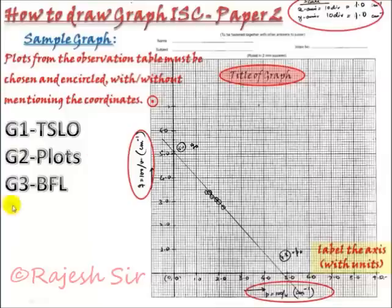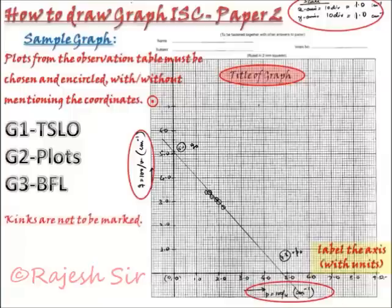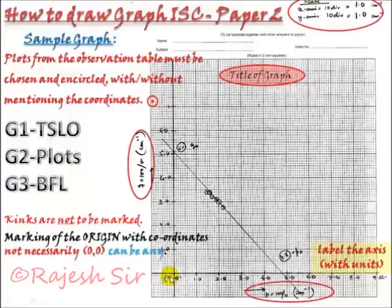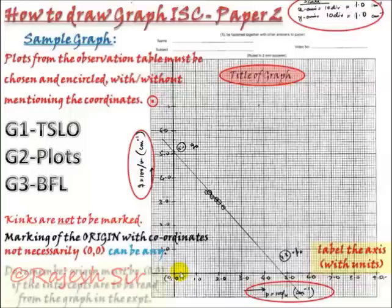Then comes the plots. You must notice the child has shown the plots very clearly. He has taken these plots from the observation table, encircled it with or without mentioning the coordinates. That's up to you whether you are mentioning the coordinates or not. Now, on the axis the kings must not be marked. Origin must be clearly labeled. It must be 0,0 if you are about to read the intercepts. This question definitely suggests that the intercepts are to be read.